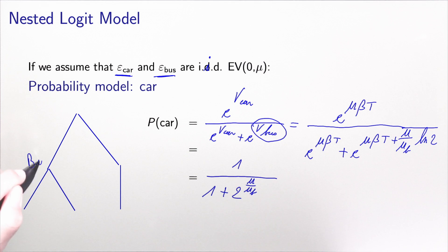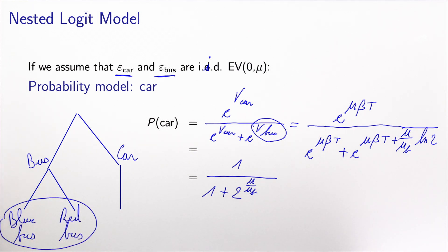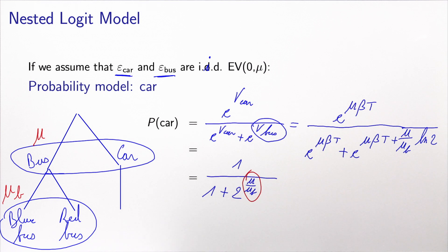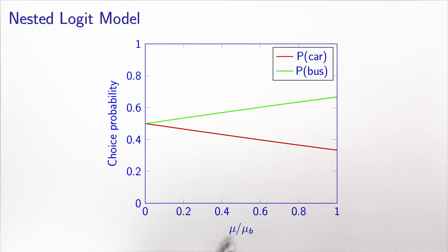Drawing the diagram again: bus and car at the upper level, blue bus and red bus below. The choice between blue bus and red bus uses a logit model with scale parameter mu_b, and the choice between bus and car uses a logit model with scale parameter mu. The probability of selecting an alternative depends on the ratio mu divided by mu_b. In this picture, choice probabilities for car and bus are plotted as a function of this ratio.